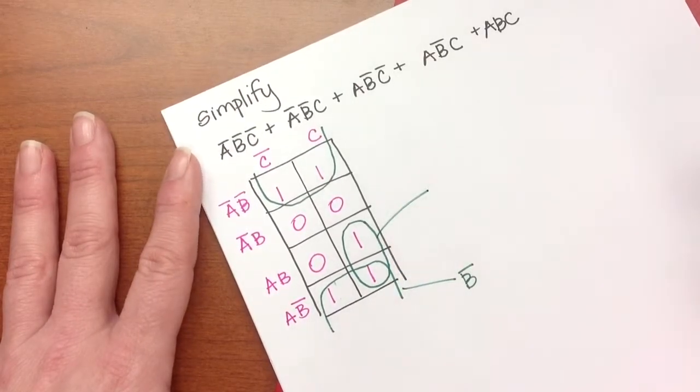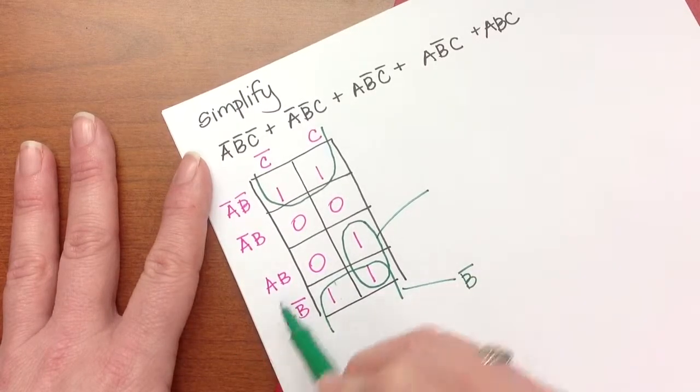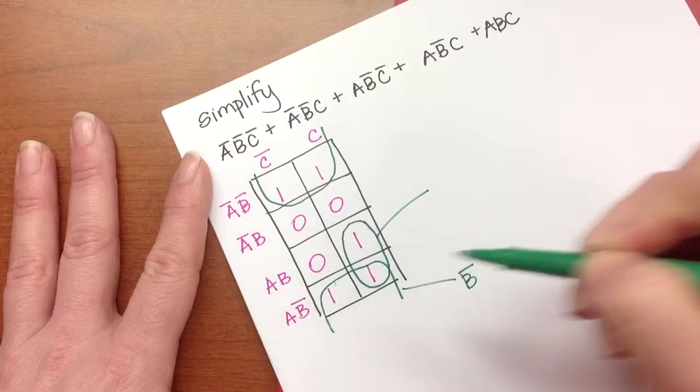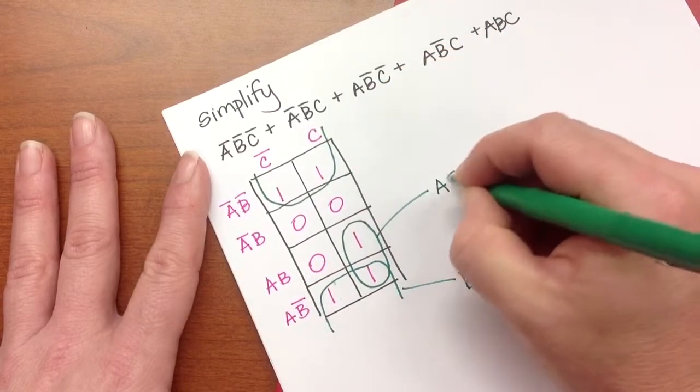And for this loop, I have what? From here to here, B changes. So I keep the A and throw away the B. And it's in the C column, so this would be A, C.